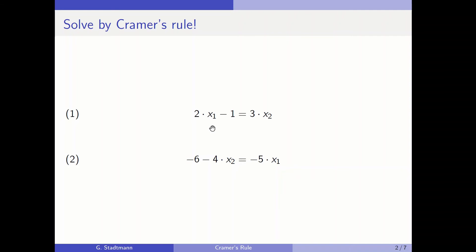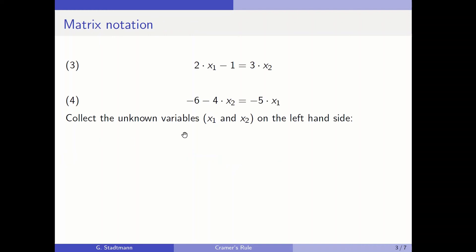In equation 1, x1 and x2 appear, and the same is in equation 2 with x2 and x1. We want to find the solution to this system of equations. In the first step it is very important that we collect the unknown variables like x1 and x2 on the left hand side and all the other terms on the right hand side.